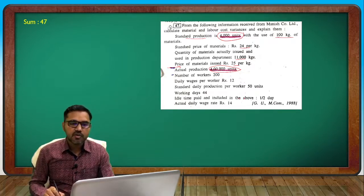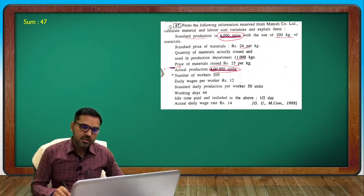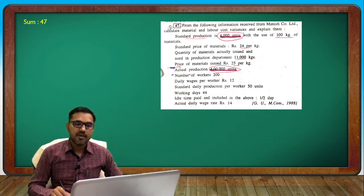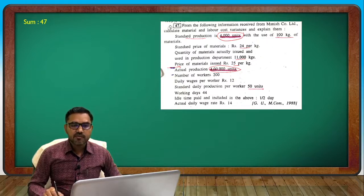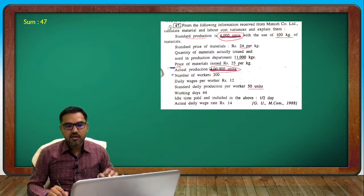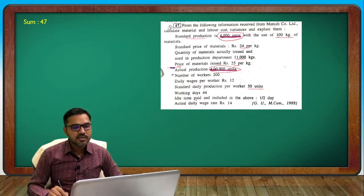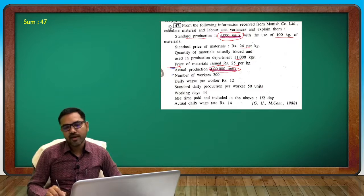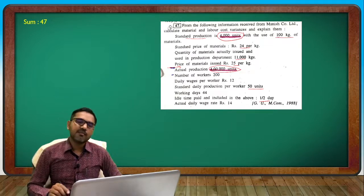Idle time — half day included in the 44 working days — actual daily wage rate is 14 rupees. For labor: 200 workers, standard daily production per worker is 50 units, so one worker working one day makes 50 units. Working days: 200 workers into 44 working days. Idle time: half day per worker included in those 44 days. Actual daily wage rate: 14 rupees.